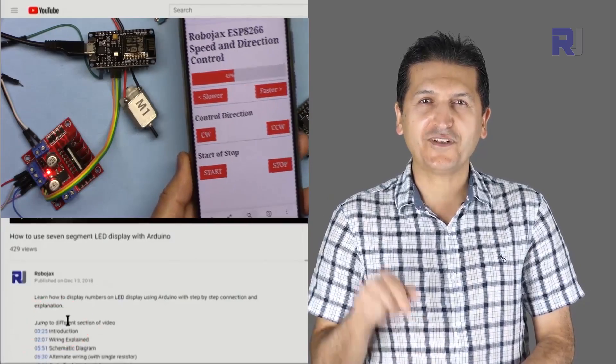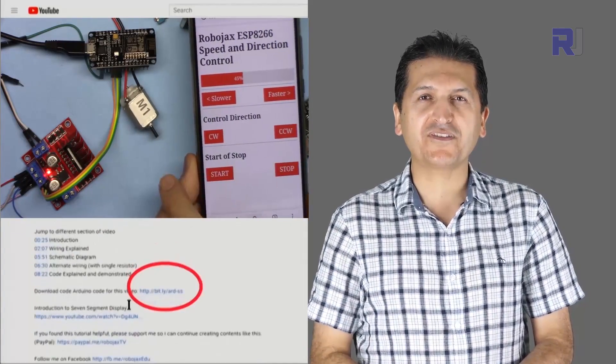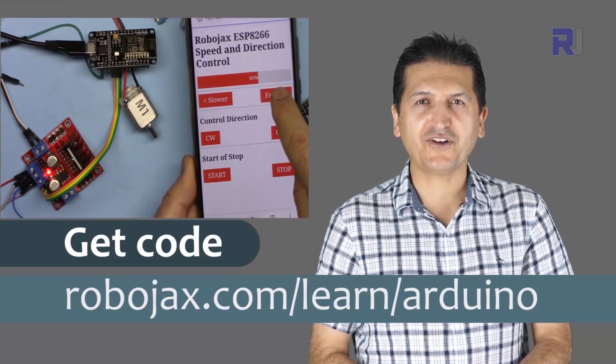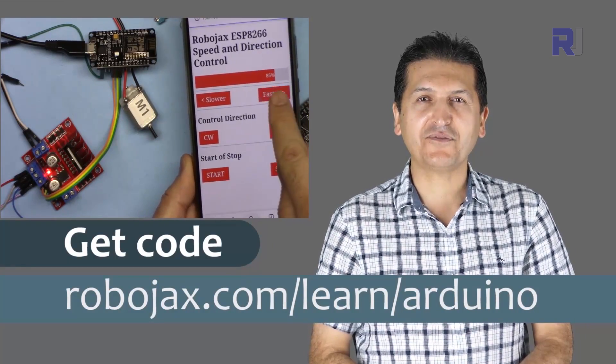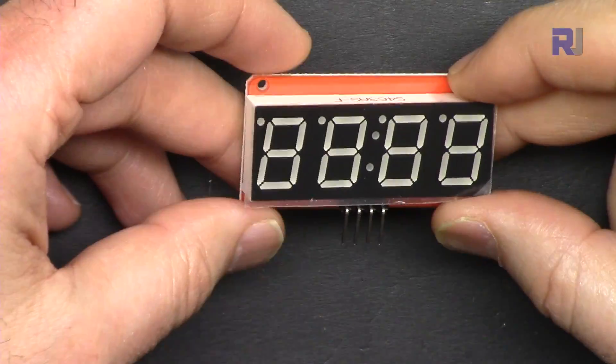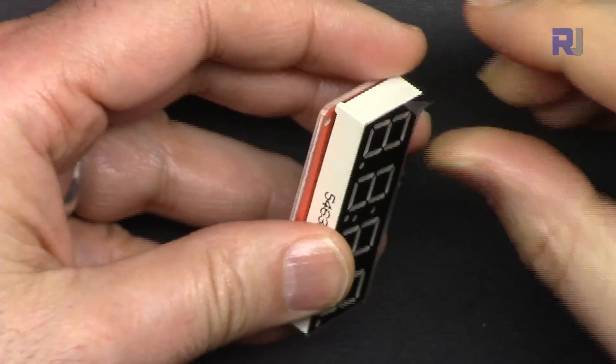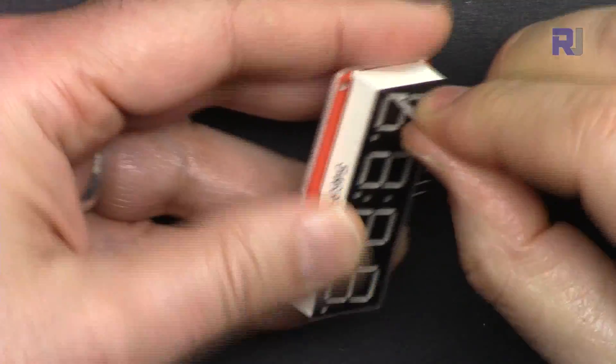You can get the code for this by clicking the link below the video in the description which will take you to robojax.com/learn/arduino. Let's get started with this. This is the display when you purchase it - they ship it with a protective sheet on it that you have to remove.